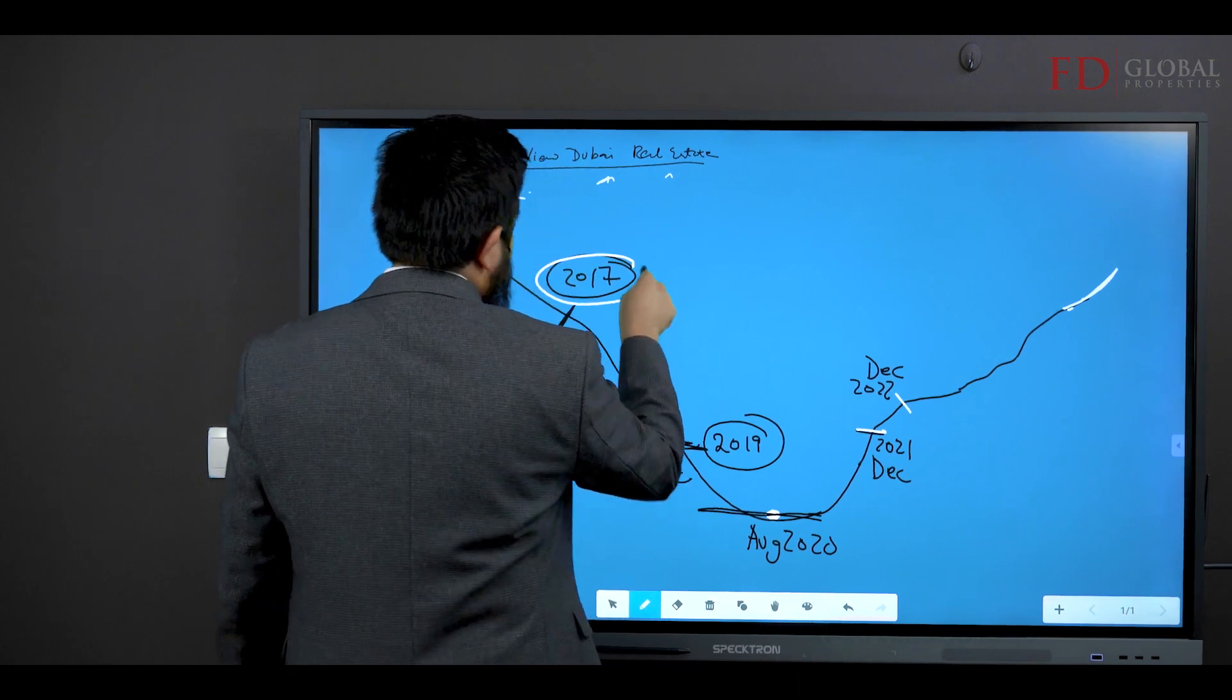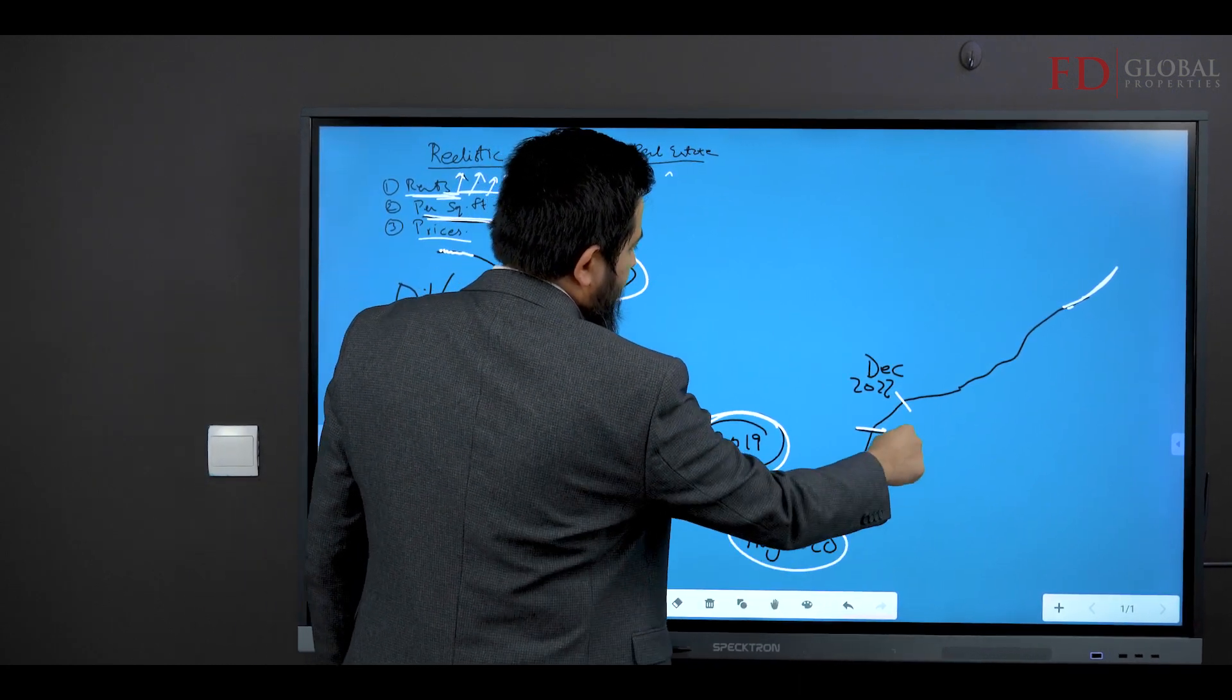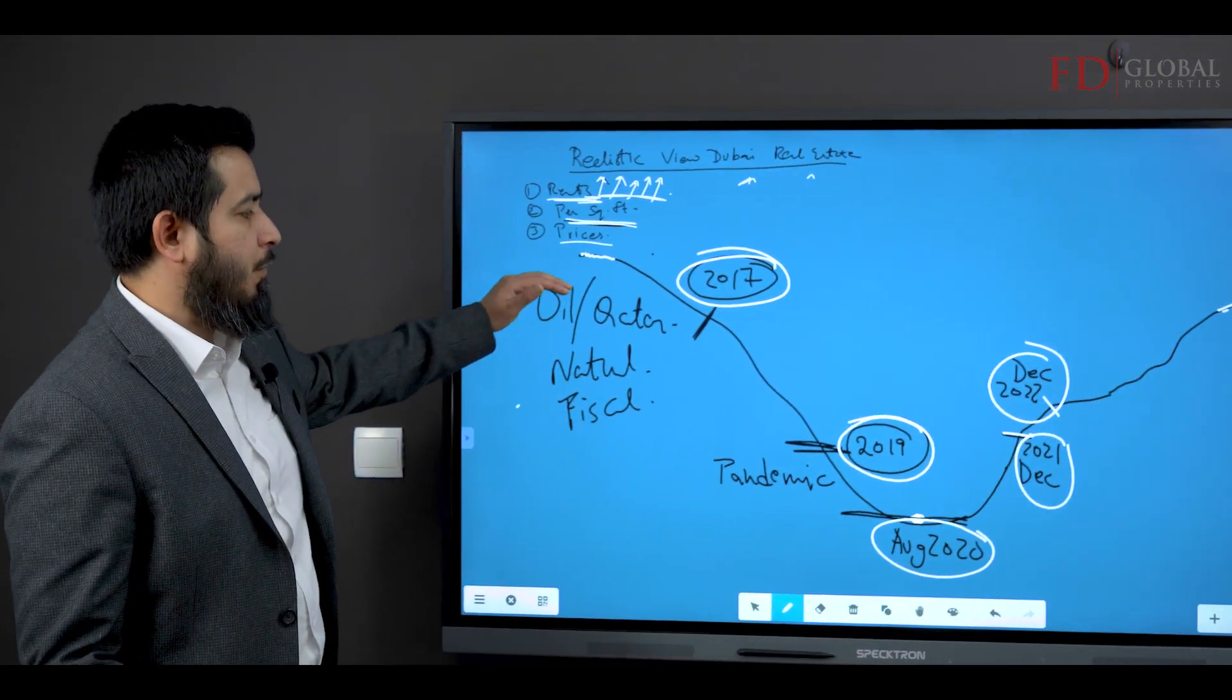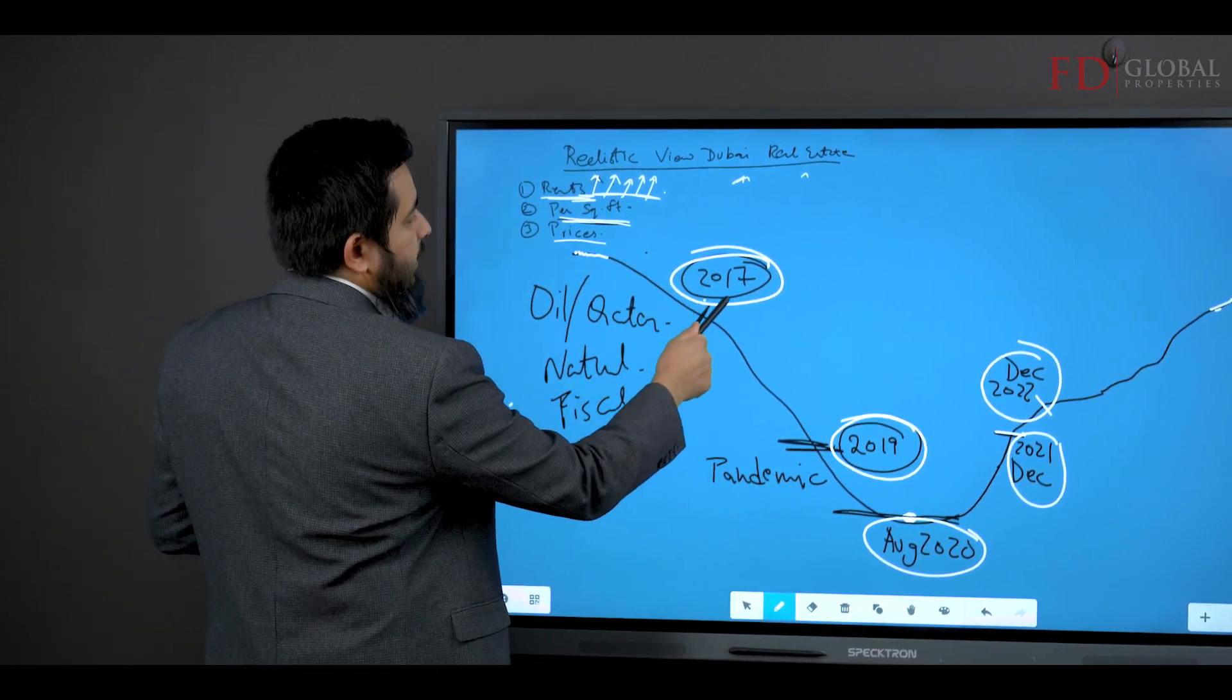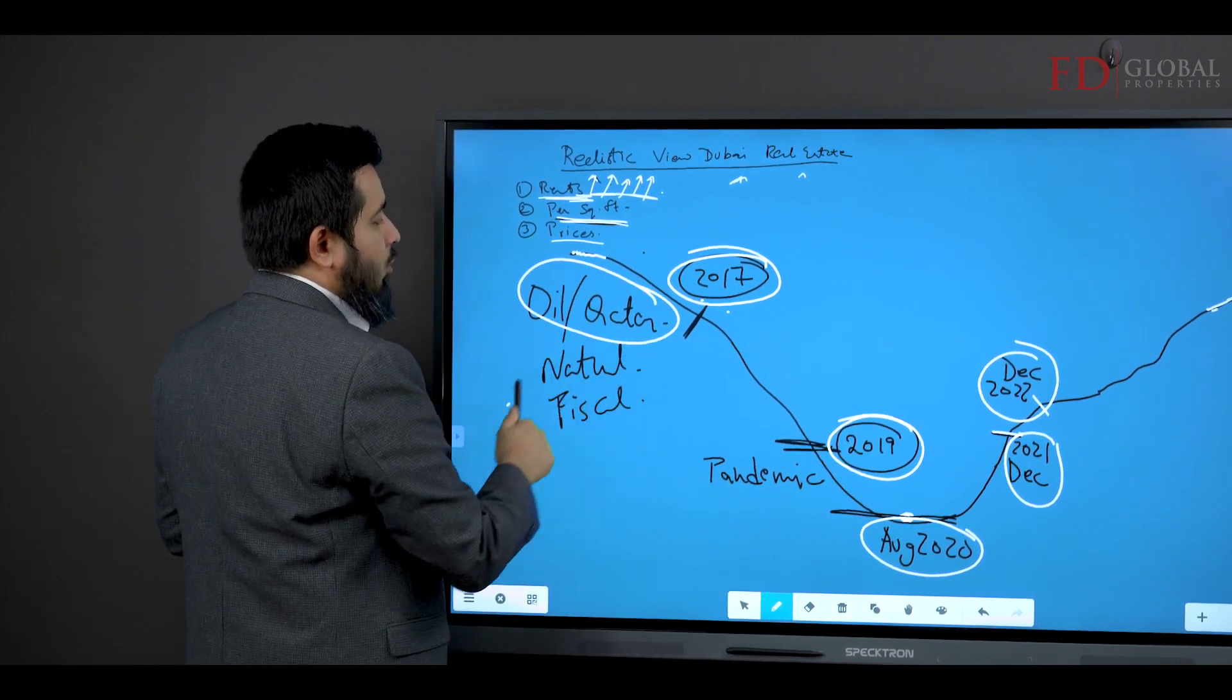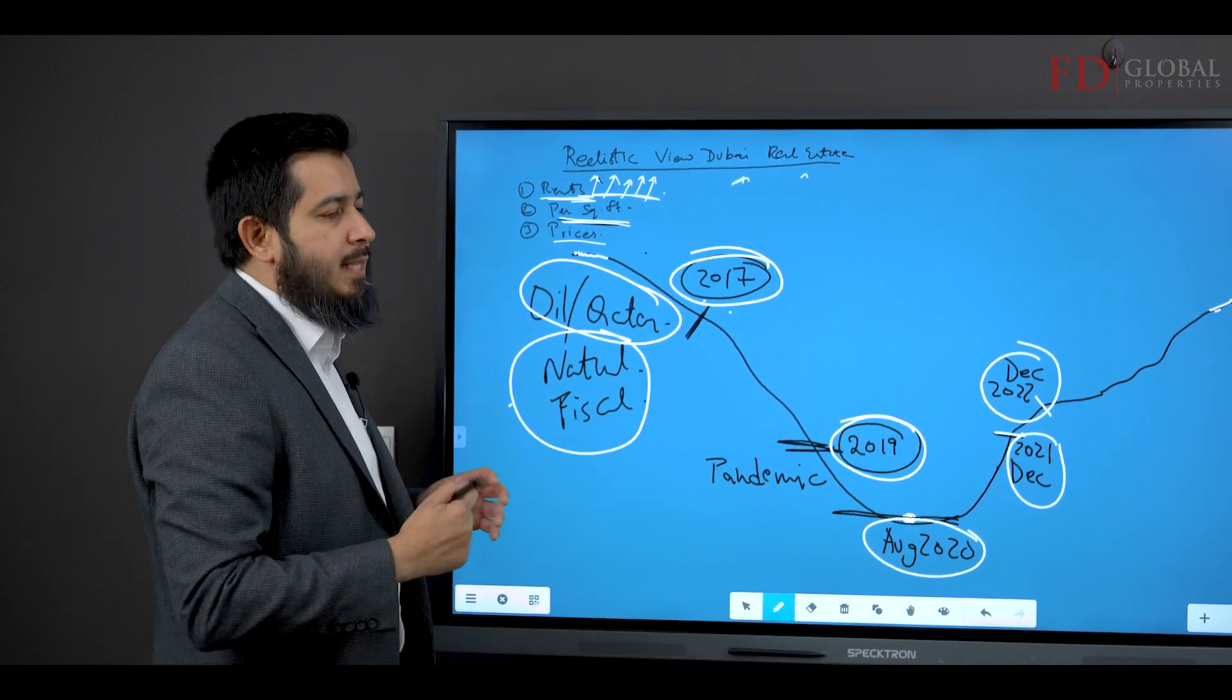This is a price graph from 2017. Then what happened in 2019, 2020, 21, and December 2022. This is a price graph of Dubai real estate, the low average prices. This is the situation that was going on in 2017 and 18 and all the way up to 19. We had the oil prices low. We had the Qatar embargo going on. We had natural fiscal reasons.